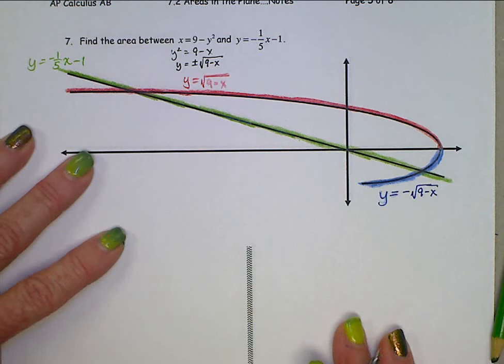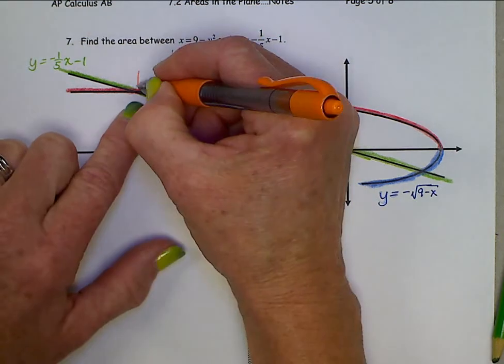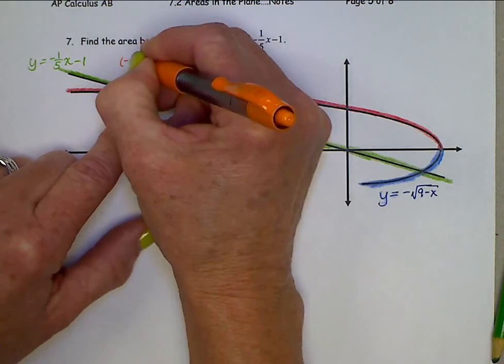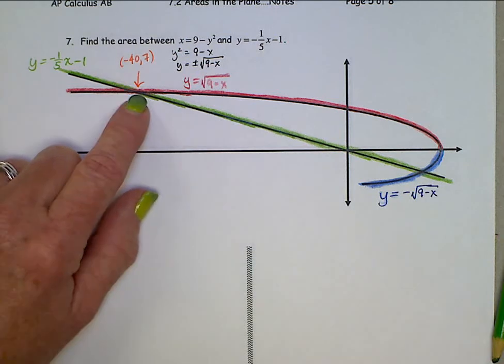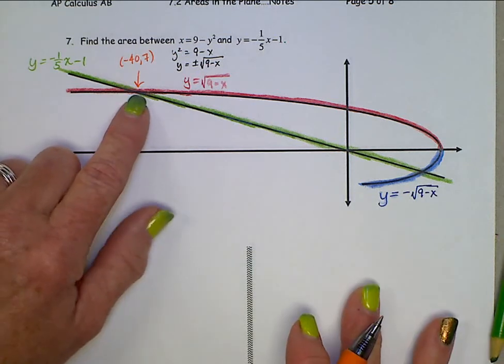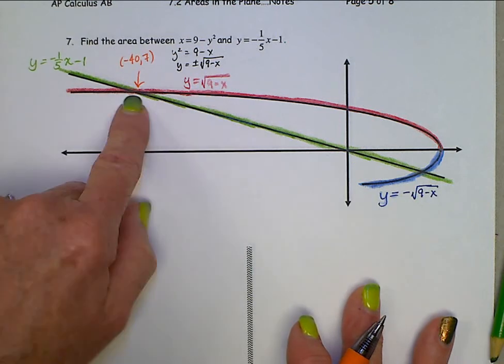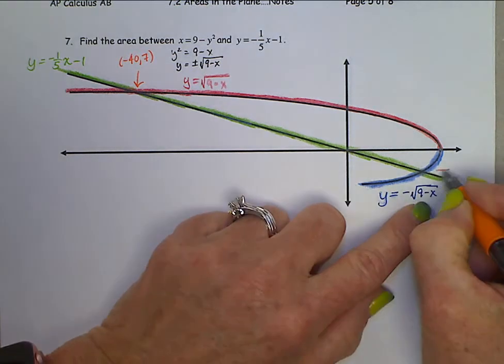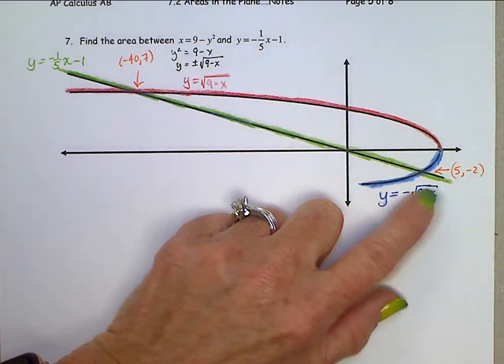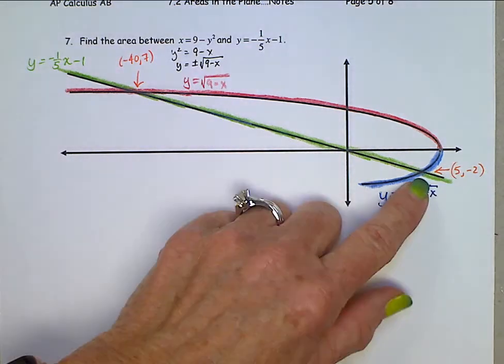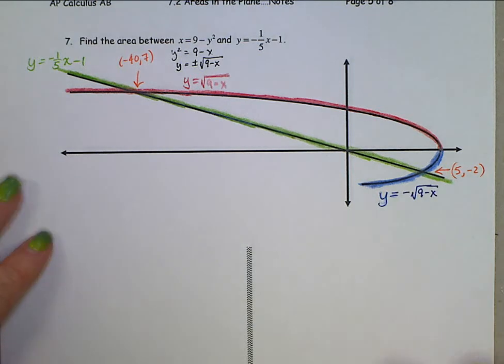To also save us some time here, this point of intersection right there is at negative 40 comma 7. You should, however, be able to find that point of intersection on your own. Set the green function equal to this red piece and then solve. Down here, this point of intersection is 5 comma negative 2. Again, you should be able to find that point of intersection on your own. Set this blue equal to that green and then solve.